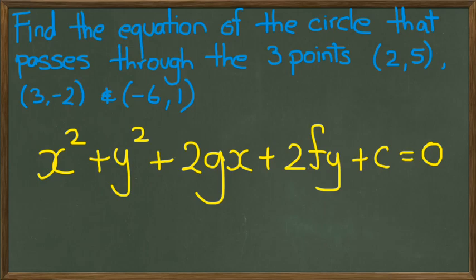And the three unknowns are going to be g, f, and c. And hopefully we can work it out from there. So let's get started.